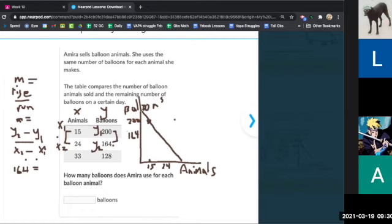So hold on. 164 minus 200. And then over x2 minus x1, 24 minus 15. And you'll see that in a moment on the screen. So as you can see on the screen here, you've got your y2 minus y1, which is 164 minus 200. Over x2 minus x1, which is 24 minus 15.